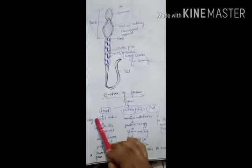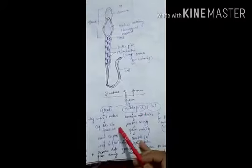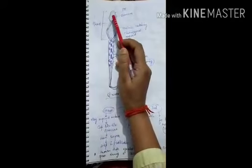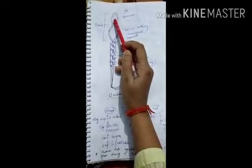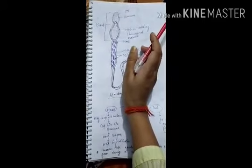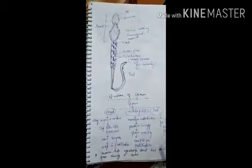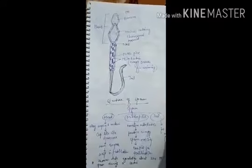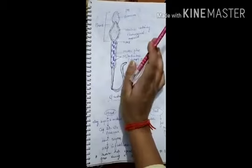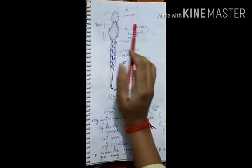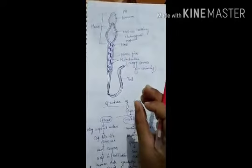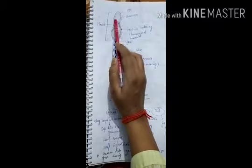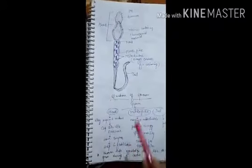The head has an elongated haploid nucleus, and a cap-like structure called the acrosome. This acrosome contains some lytic enzymes. These enzymes help in fertilization — when the sperm enters the female body, fertilization occurs when sperm and ovum are fused. The enzymes in the acrosome assist in this fusion and fertilization.